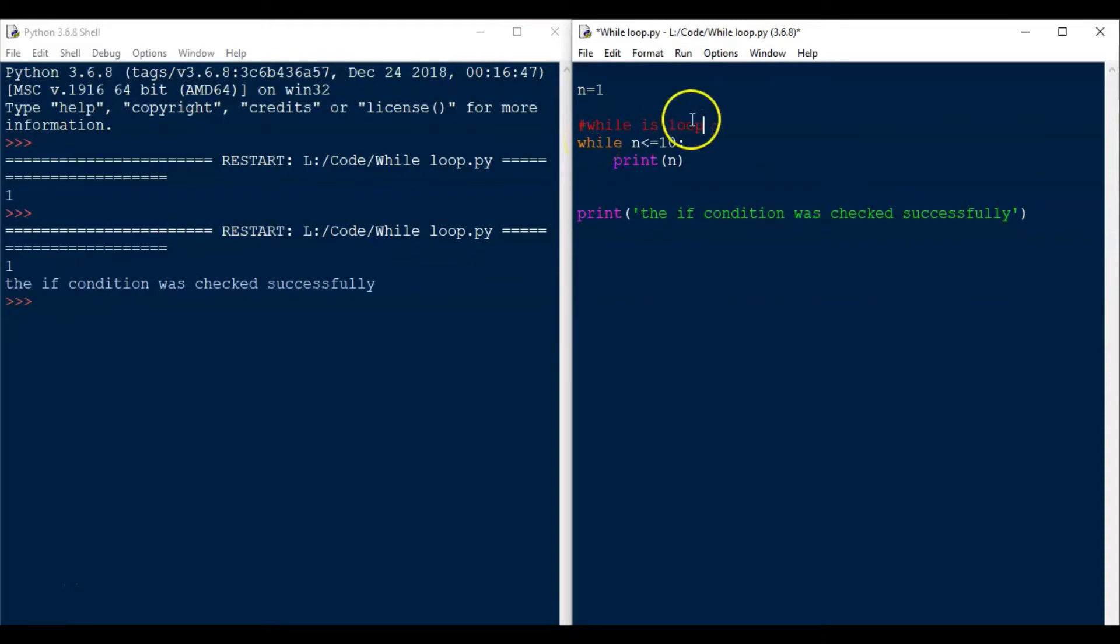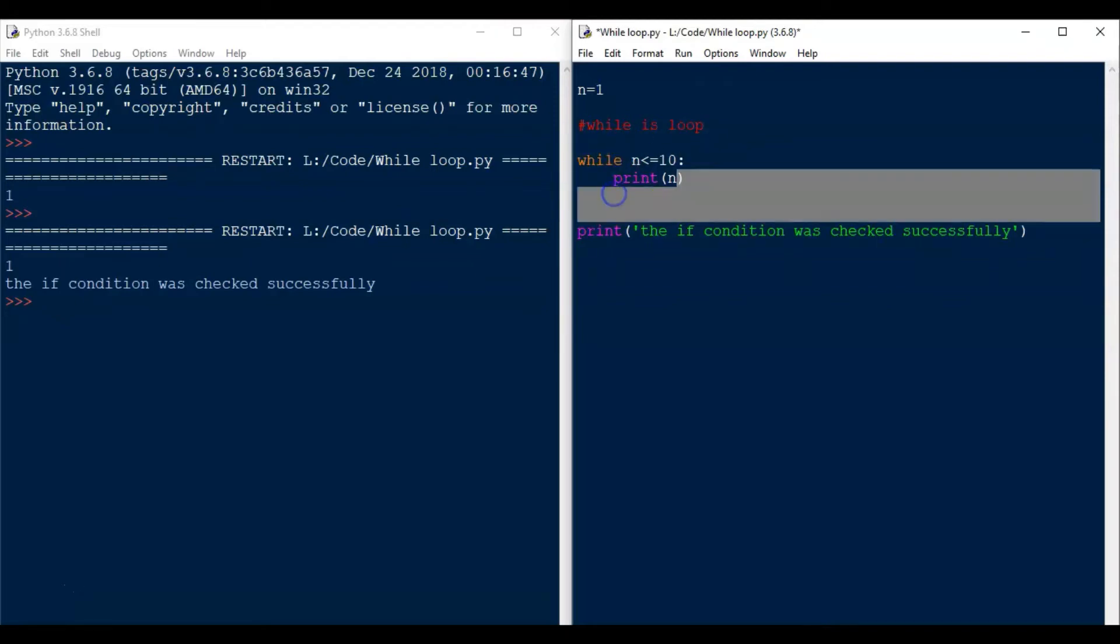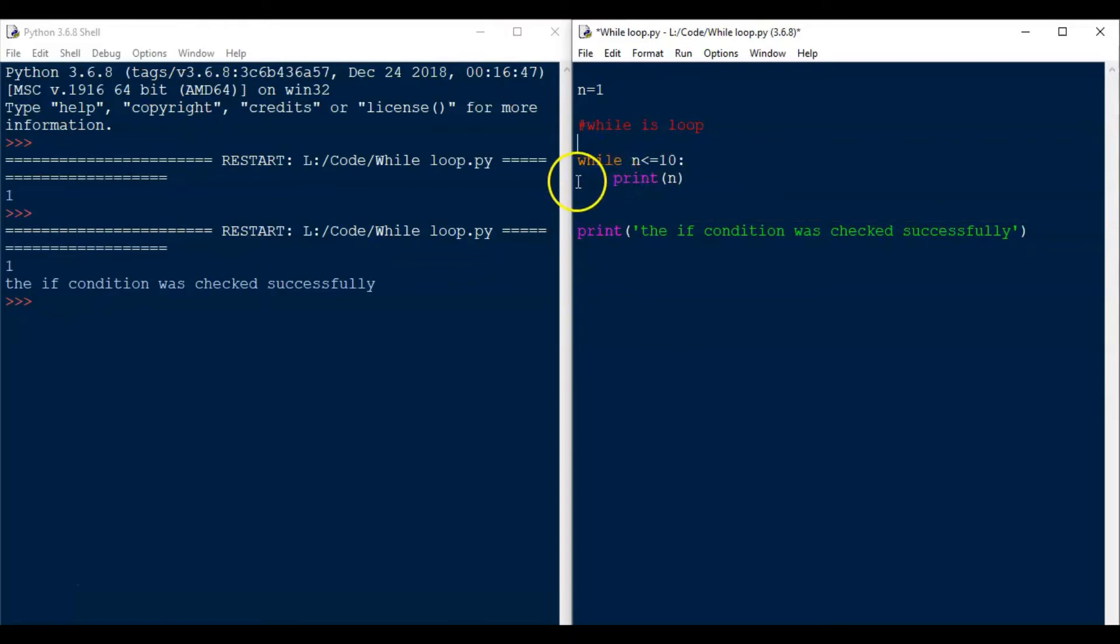I made the change here. I changed if to while. For while loop also, just like if statement, we have to use tab to indent the code. If we don't give indent, it will show an error. Now, save the file and run the code.